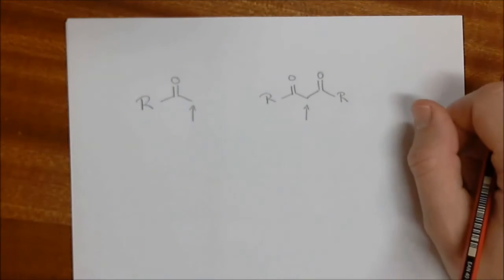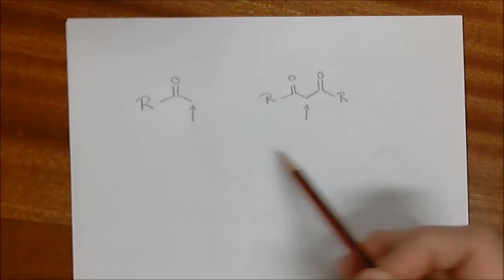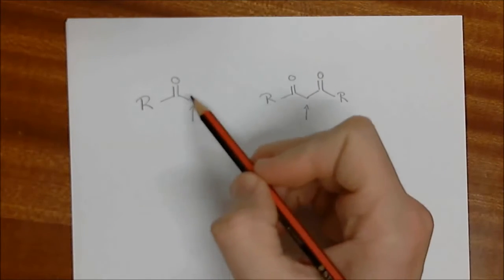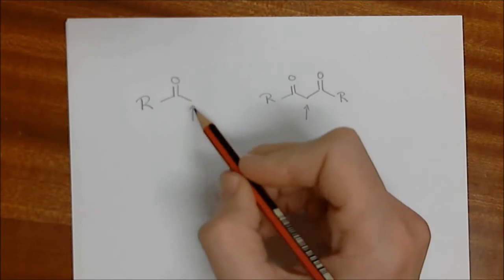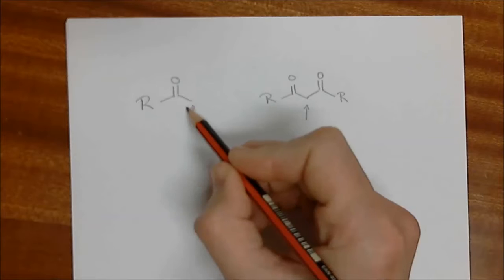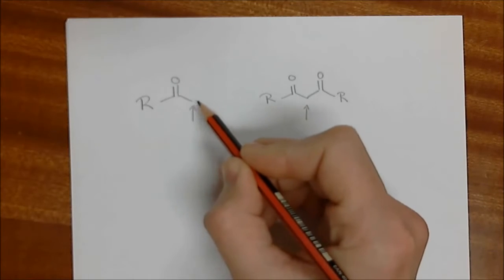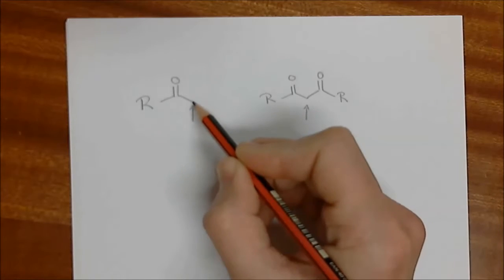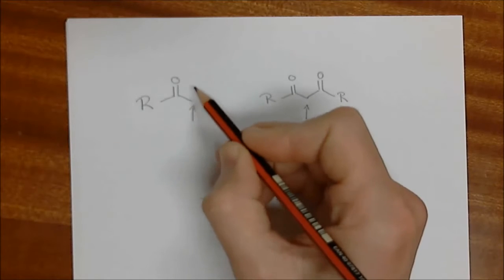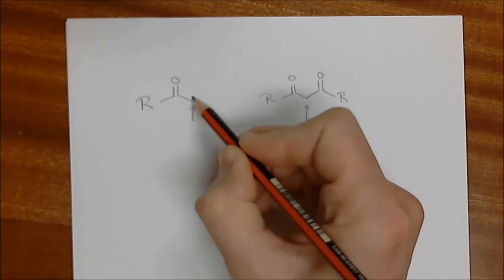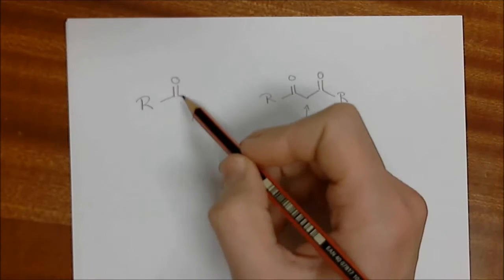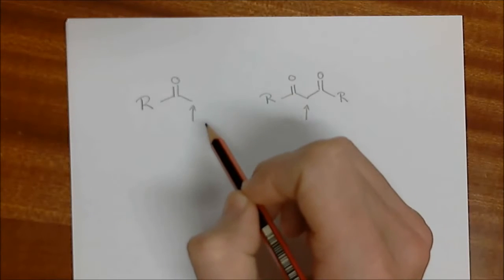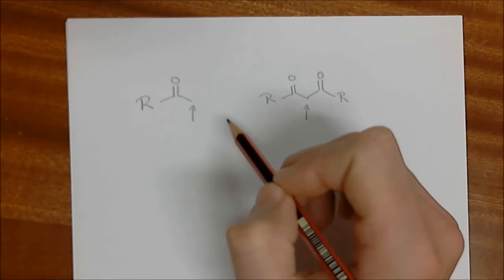As we begin the second lecture on enolate chemistry, we're talking about compounds that have a carbon next door to a carbonyl group with hydrogens on that carbon. Those hydrogens are more acidic because when we remove that proton, the negative charge remaining is resonance stabilized by the carbonyl group. We've looked before at all the different flavors of these types of compounds in terms of enolates.